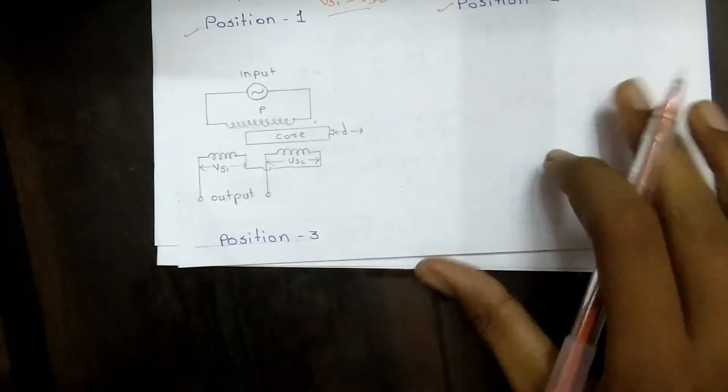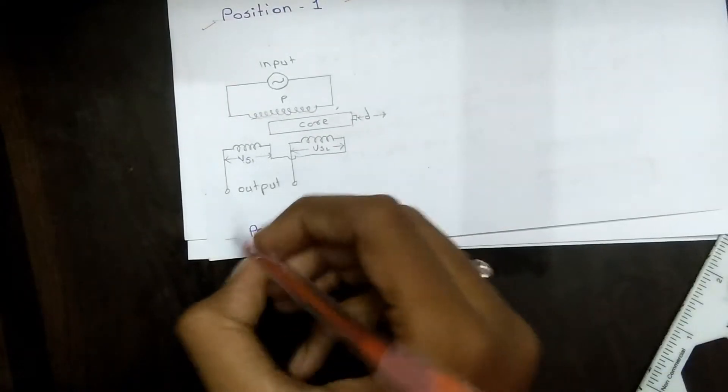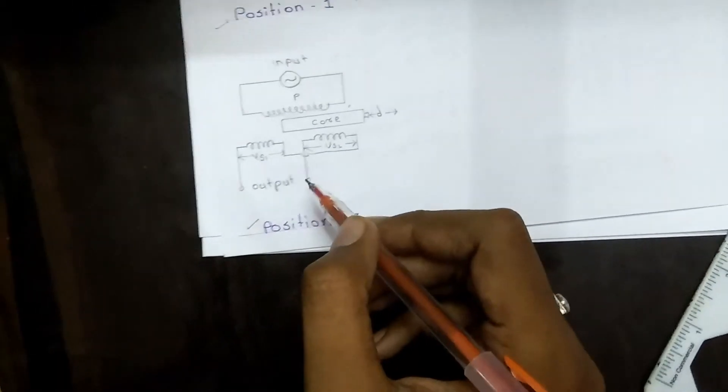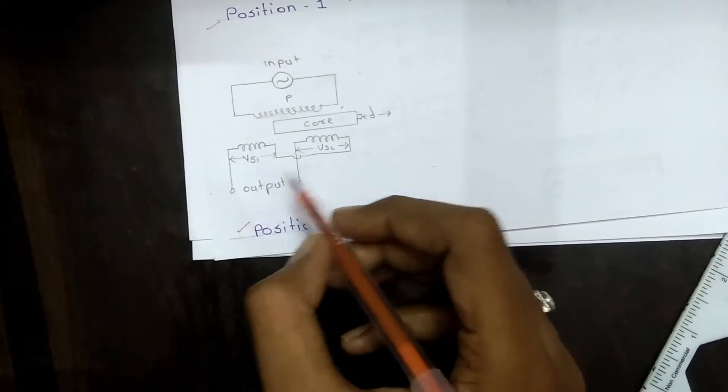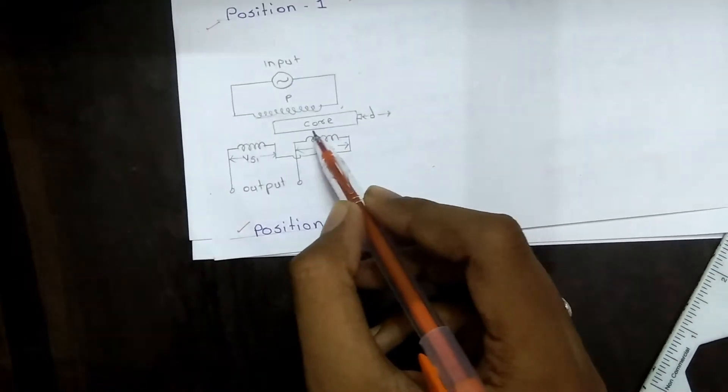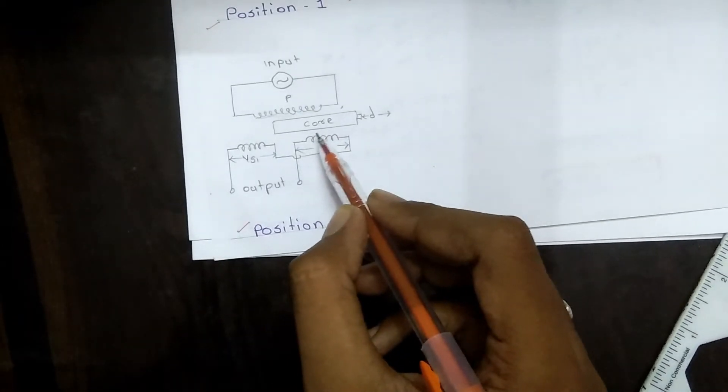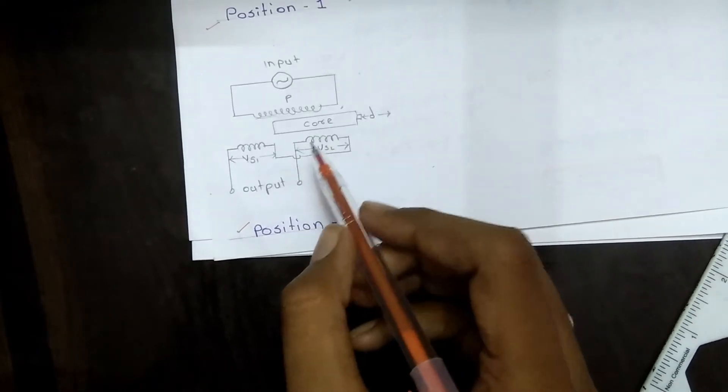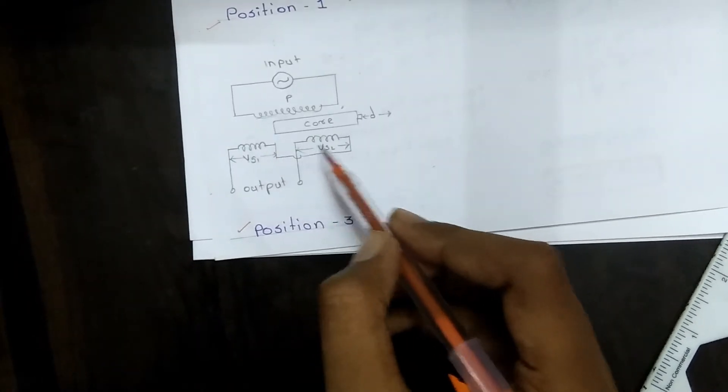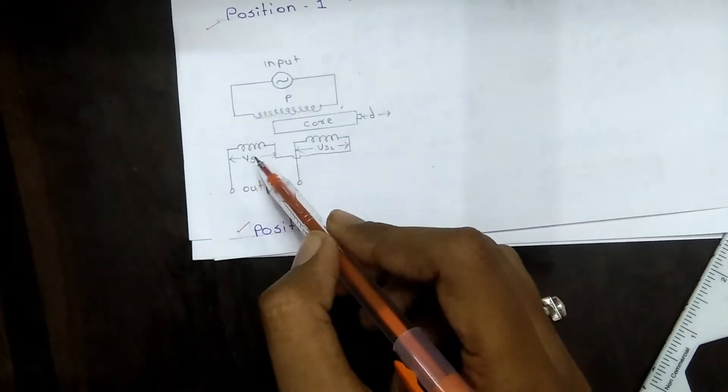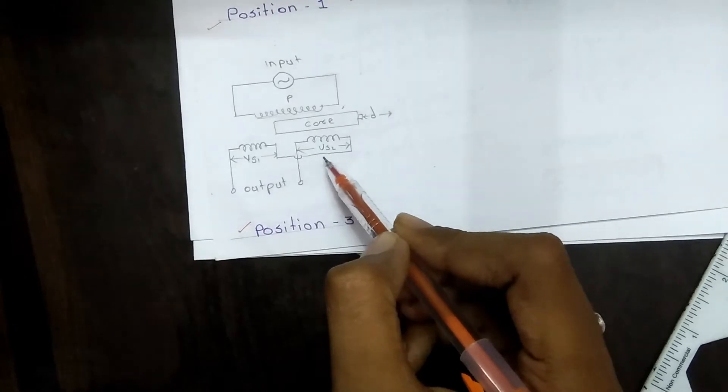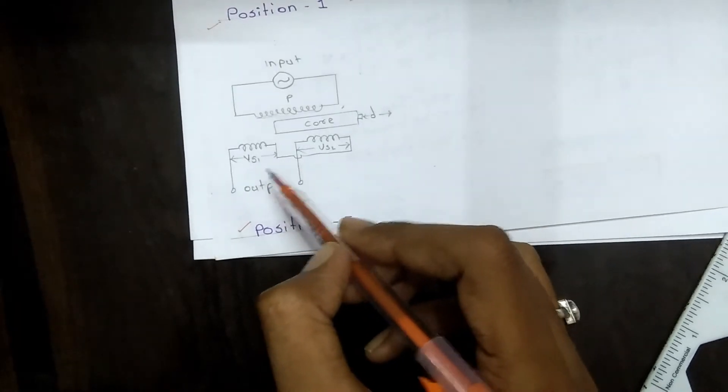Position 3: when there is a negative displacement applied to the core, that is, the core is moved to the right of the null position, more flux links with winding S2 than S1. Hence, the EMF induced in winding S2 is greater than S1.